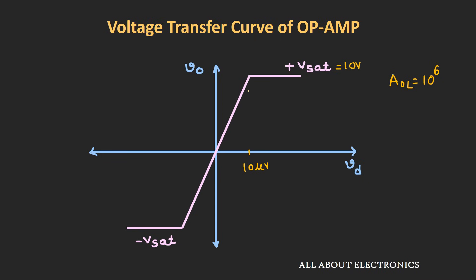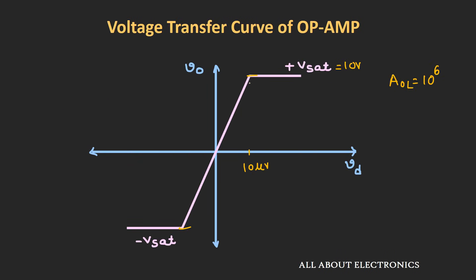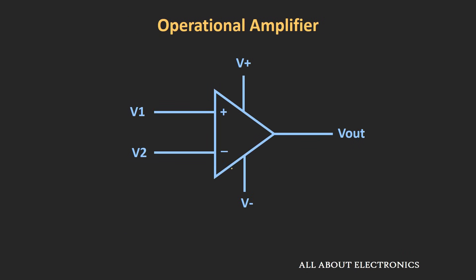Whenever we want to use this op-amp as an amplifier, we need to use it in a linear region so that the input and output have a linear relationship. But whenever we use this op-amp in open-loop configuration, this linear range is very small. So if we want to use this op-amp as an amplifier, we need to somehow control the gain, and we can do so by applying feedback from the output to the input side.